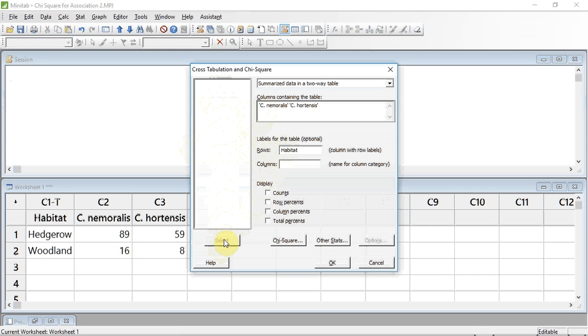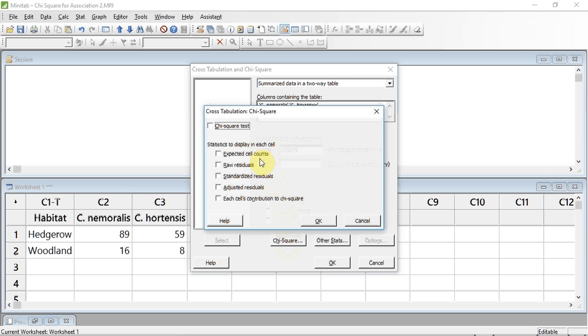Our data is in the form of Counts, so I'm now going to tick the Count box to let Minitab know that we are using Counts. Now to select the test, I'm going to go down to Chi-square and click. I select the Chi-square test by ticking the little box by it, but I'm also going to ask Minitab to display the expected values that it calculates by ticking the expected cell counts box. I now press OK.